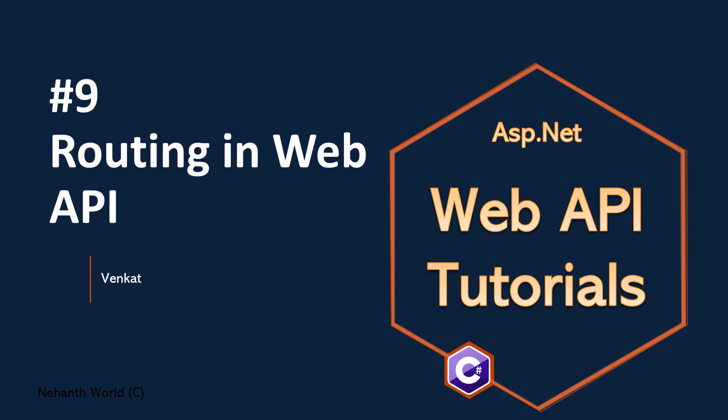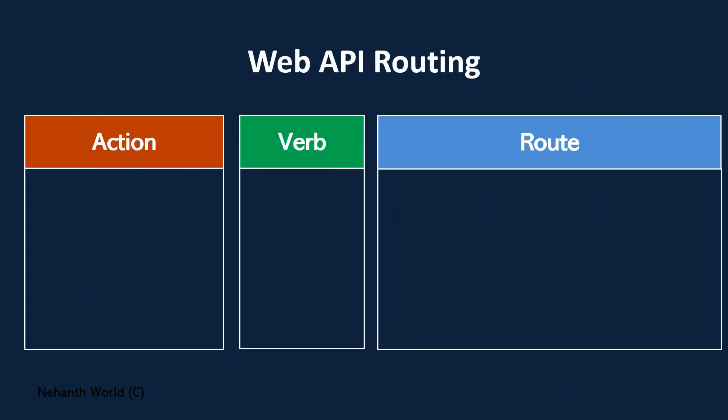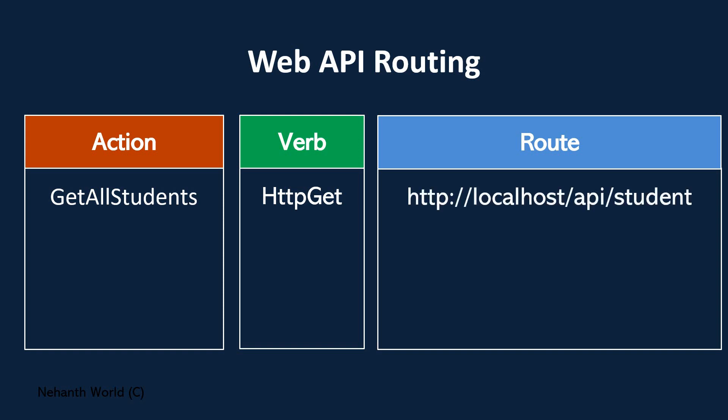If we want to look at the mapping or binding, consider a controller that has actions or action methods written inside it. Every action method inside a WebAPI controller will be attributed with a verb and a route. For example, there is an action method in a controller called 'Get All Students' — that action is basically an HTTP GET action.